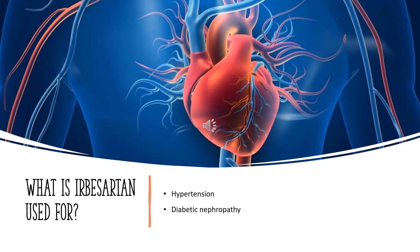Irbesartan is indicated to treat hypertension and diabetic nephropathy in hypertensive patients with type 2 diabetes, elevated serum creatinine, and proteinuria. A combination product with hydrochlorothiazide is indicated for hypertension in patients with uncontrolled hypertension on monotherapy, or as first-line in patients not expected to be well-controlled with monotherapy.